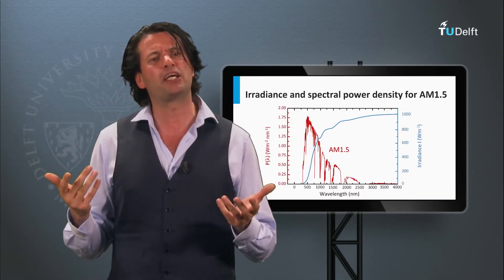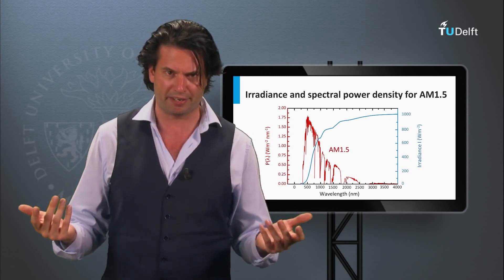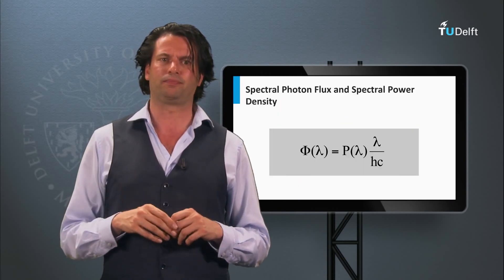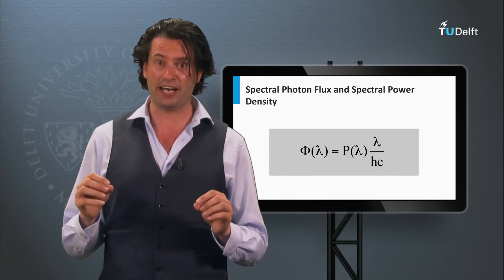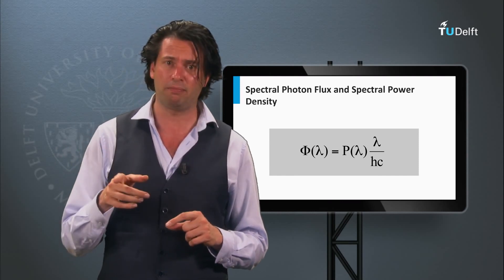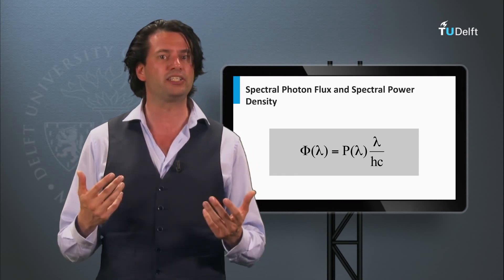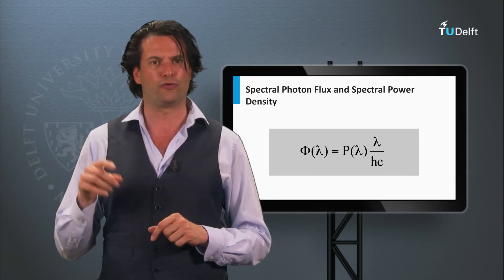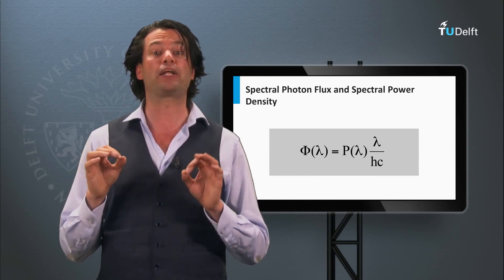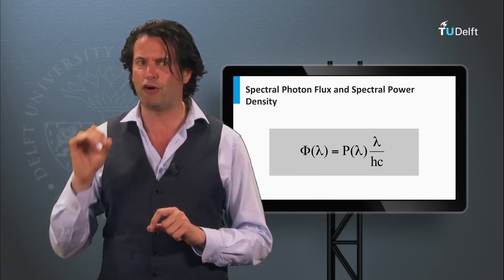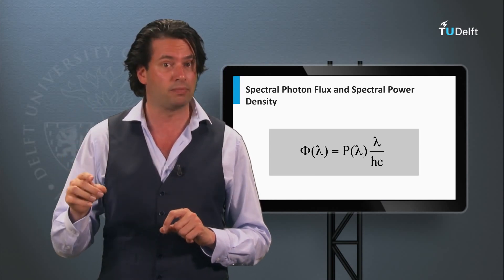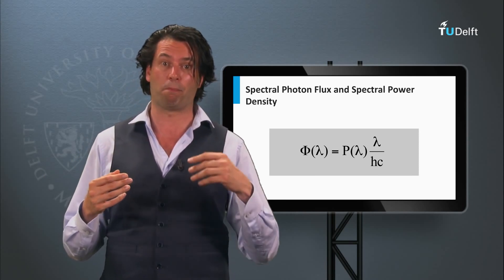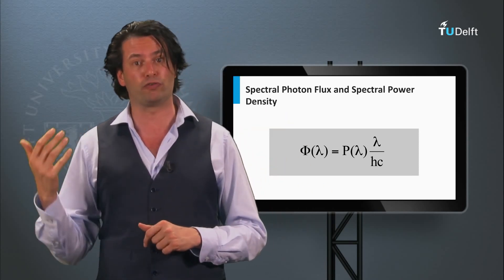The irradiance tells us something about power per unit area. However, we can also consider light as a number of photons. The photon flux phi is the amount of photons per time per area. Similar to irradiance, the photon flux does not contain any spectral information. For that we define the spectral photon flux, which is the amount of photons per unit area, per time, per wavelength range.